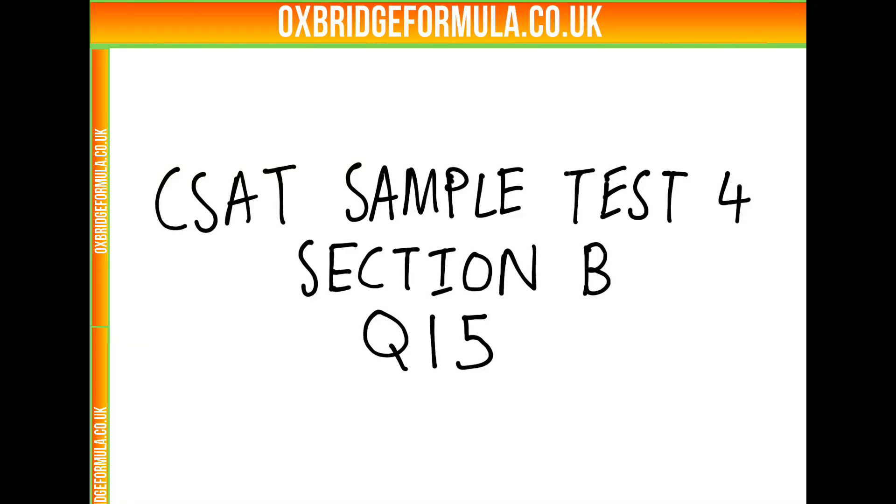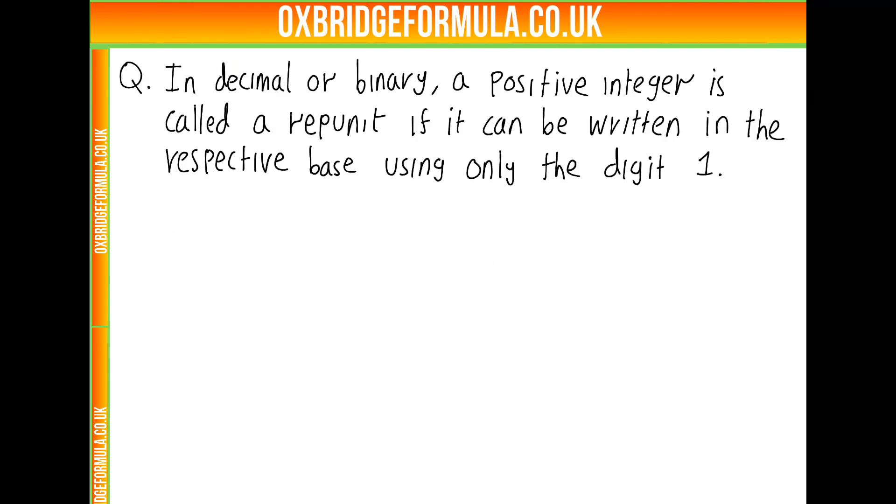This is the solution video for question 15 from section B of the fourth sample test for CSAT. In this question, we're told in decimal or binary, a positive integer is called a repunit if it can be written in the respective base using only the digit 1.